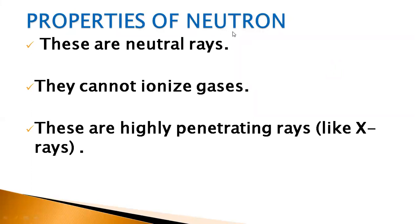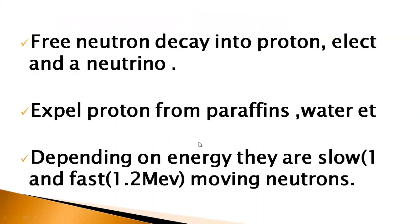So it was the discovery of neutron. Here are some properties of neutron. Number one: these rays are neutral rays. Because they do not carry any charge, that's why they cannot ionize gases. Number third: these are highly penetrating rays, just like x-rays. Just like x-rays penetrate into our bones and through our body, neutrons are also highly penetrating rays.